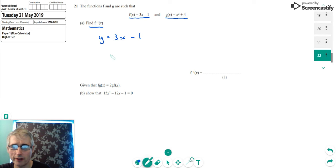And then rearrange it to make x the subject. So if we do that, we can first of all add 1 to both sides. If we add 1 to both sides, then we'll end up with y plus 1 equals 3x.